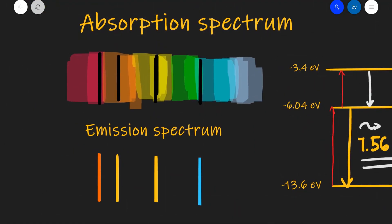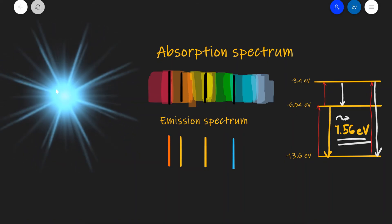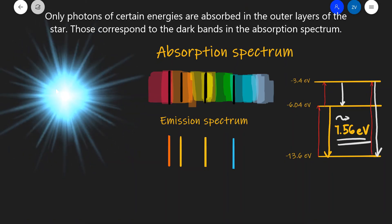Now how is an absorption spectrum really formed in detail? Let's have a look. Let's imagine that we have a star. This star is going to be emitting photons across the entire spectrum. However, as the photons propagate, only certain energy of photons are going to be absorbed in the surface of the star and in general throughout the outer layers of the star.